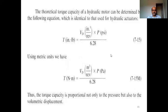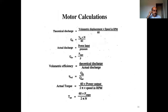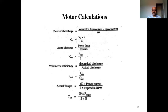For motor calculations, the theoretical discharge can be calculated by volumetric displacement multiplied by the speed in RPM divided by 60. So Q theoretical equals volumetric displacement into speed in RPM divided by 60, giving the theoretical discharge in cubic meters per second.